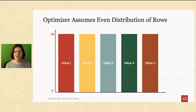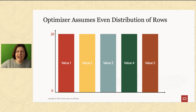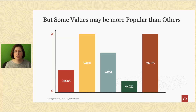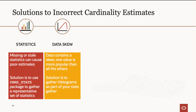There are lots of cases where that's true, or at least approximately true, but there are just as many cases where it's not. For example, some products may be more popular than others, some zip codes for our customers will be more popular than others. For those types of columns, it's very beneficial to have a histogram to tell the optimizer about that data skew. That may be a reason why you're not getting the cardinality estimate you're expecting.